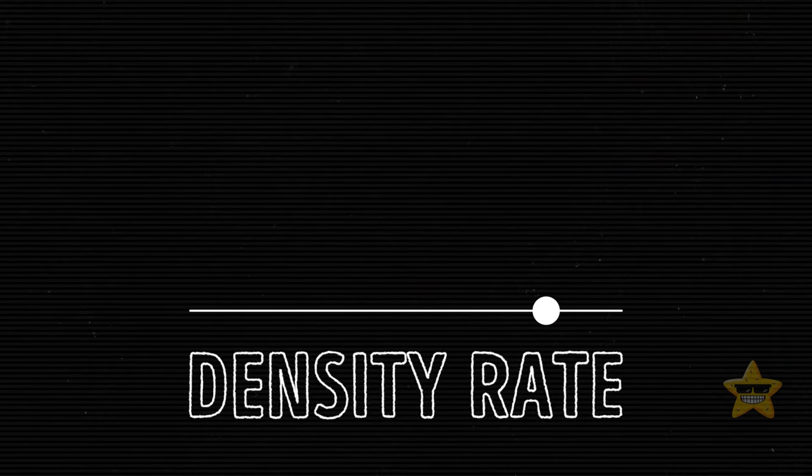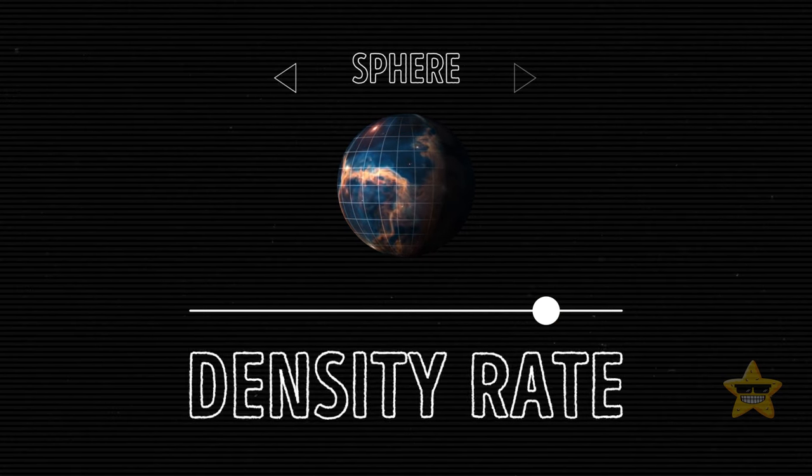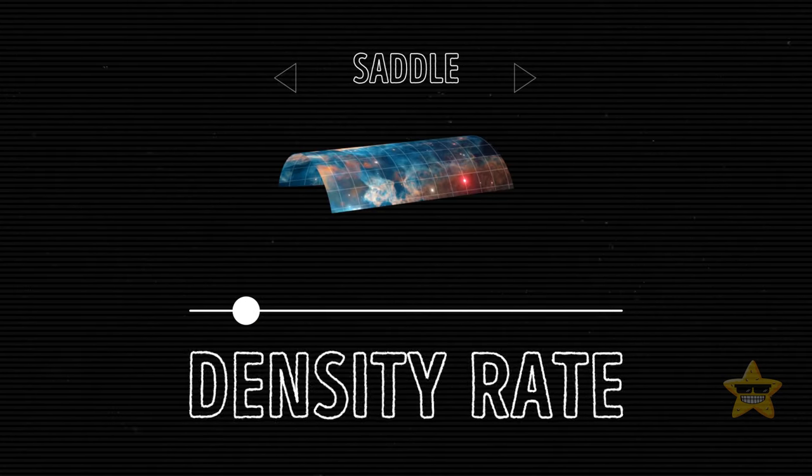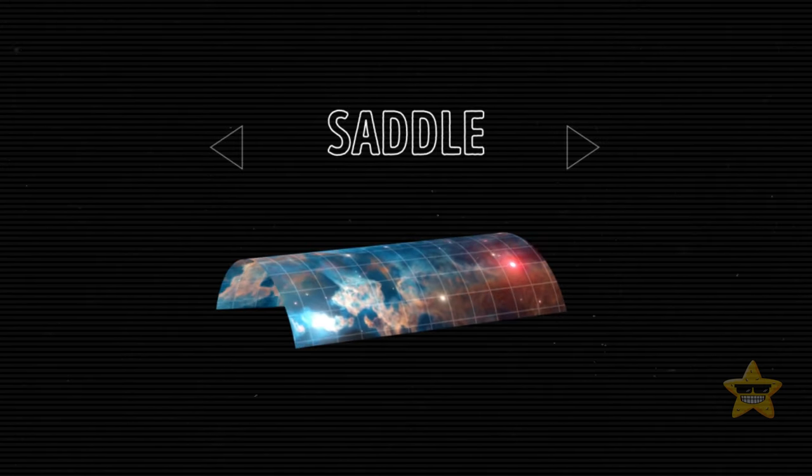Alternatively, if the density of the universe is low and not enough to halt the expansion, then space distorts in the opposite direction. This results in an open universe with negative curvature that resembles a saddle. You know, like on a horse.